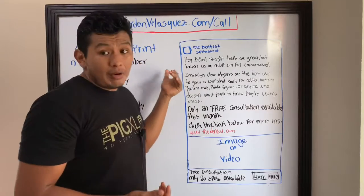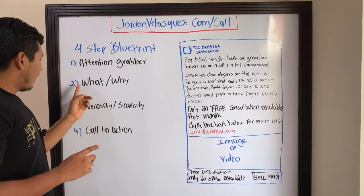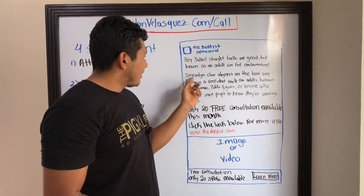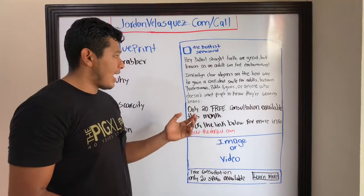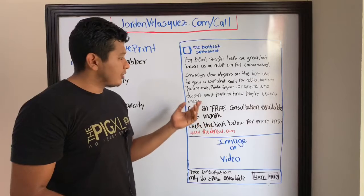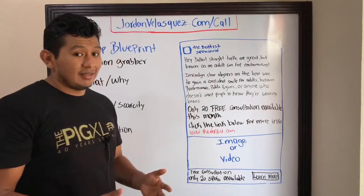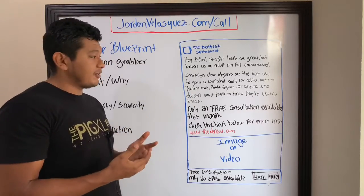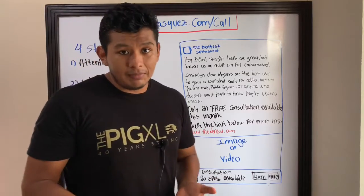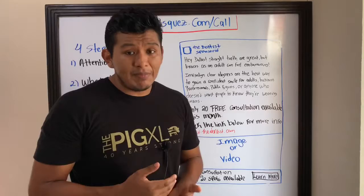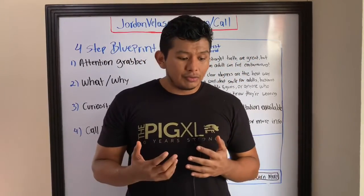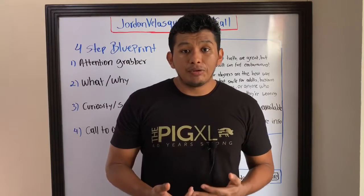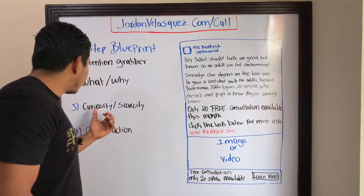Step two is answering 'What and Why.' Something like: 'Invisalign clear aligners are the best way to gain a confident smile for adult professionals, public figures, or anyone who doesn't want people to know they're wearing braces.' What — Invisalign clear aligners. Why — because it helps you hide the fact you're wearing them. Go straight to the point and tell them what you're offering and why they should get it.